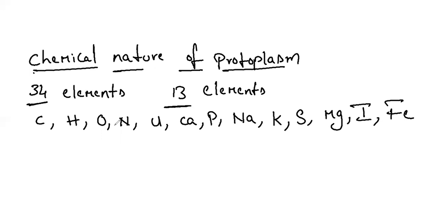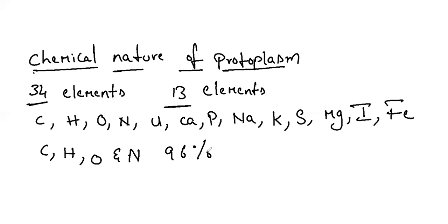Once again: carbon, hydrogen, oxygen, nitrogen, chlorine, calcium, phosphorus, sodium, potassium, sulfur, magnesium, iodine, and iron. Mainly, carbon, hydrogen, oxygen, and nitrogen form 96 percent of protoplasm. The rest of the elements occur in very small quantities — around 0.756 percent — so they are called trace elements.